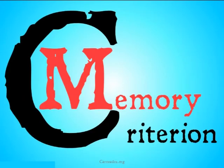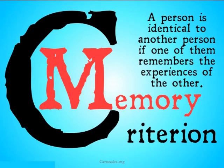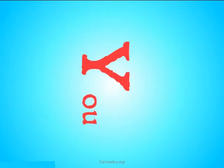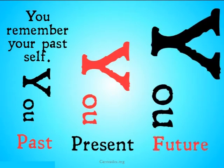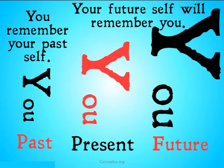The memory criterion is possibly the most intuitive version of personal identity that a lot of people walk into philosophy having. A person is identical to another person if one of them remembers the experiences of the other. Basically, you in the present are identical to you in the past if you remember your past self — the things your past self did. And you in the present are identical to you in the future if your future self remembers you. It doesn't make sense to be identical with something we don't remember or whose experiences we don't have in our minds. So the memory criterion seems like a pretty intuitive and commonsensical version of personal identity.